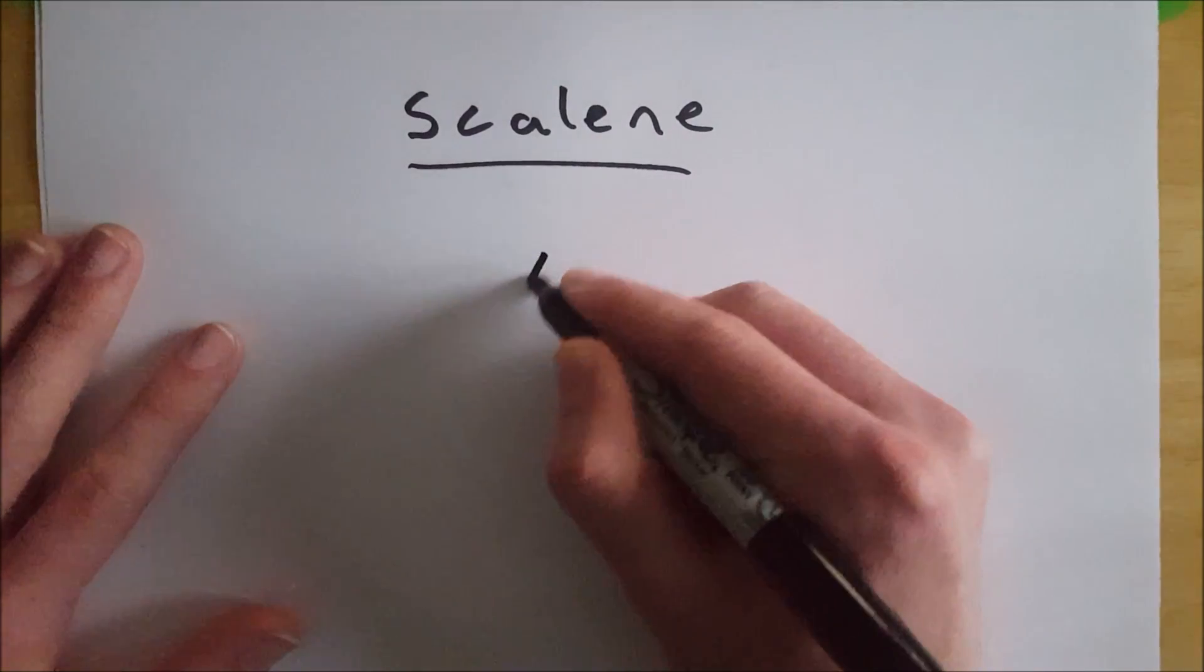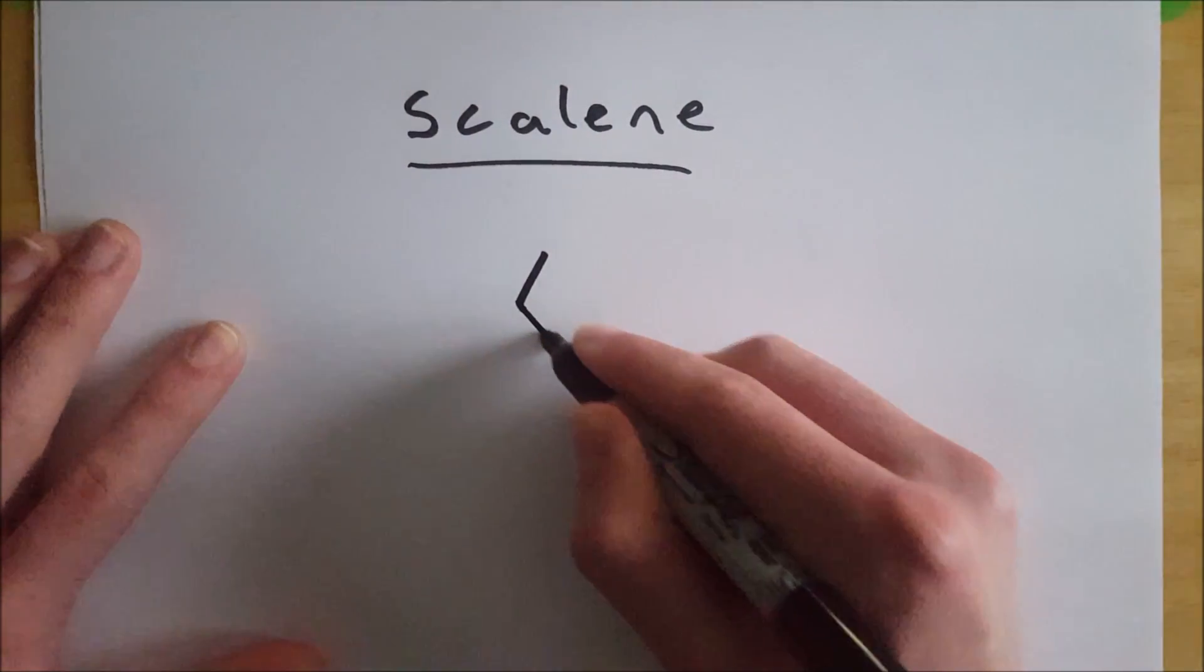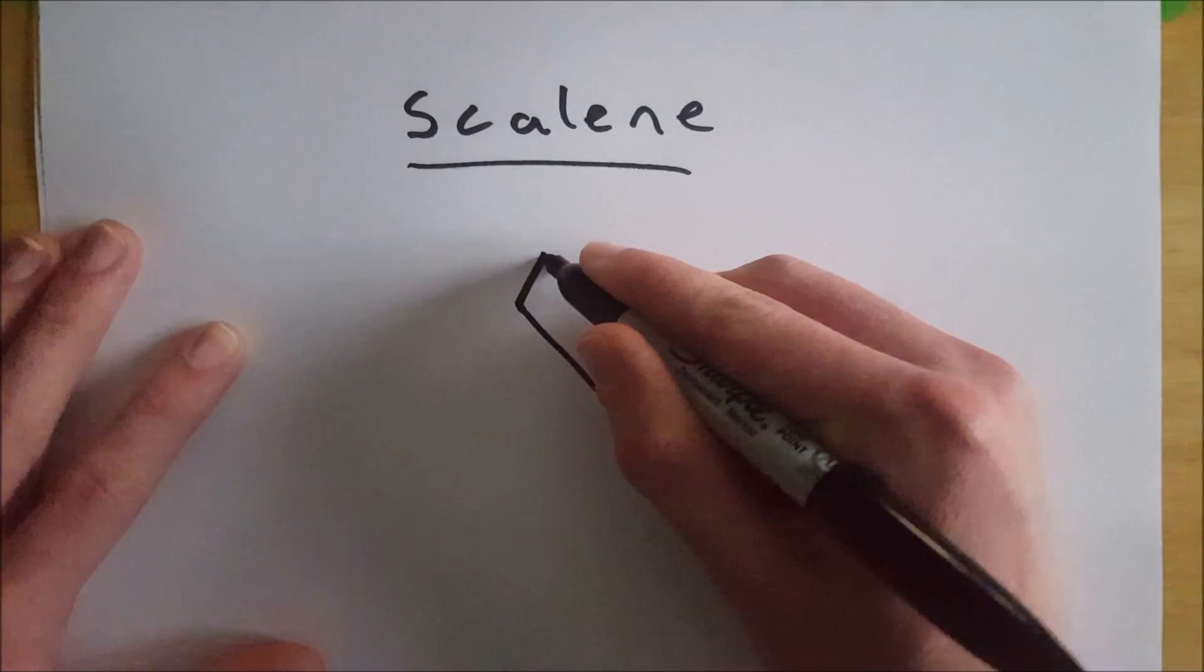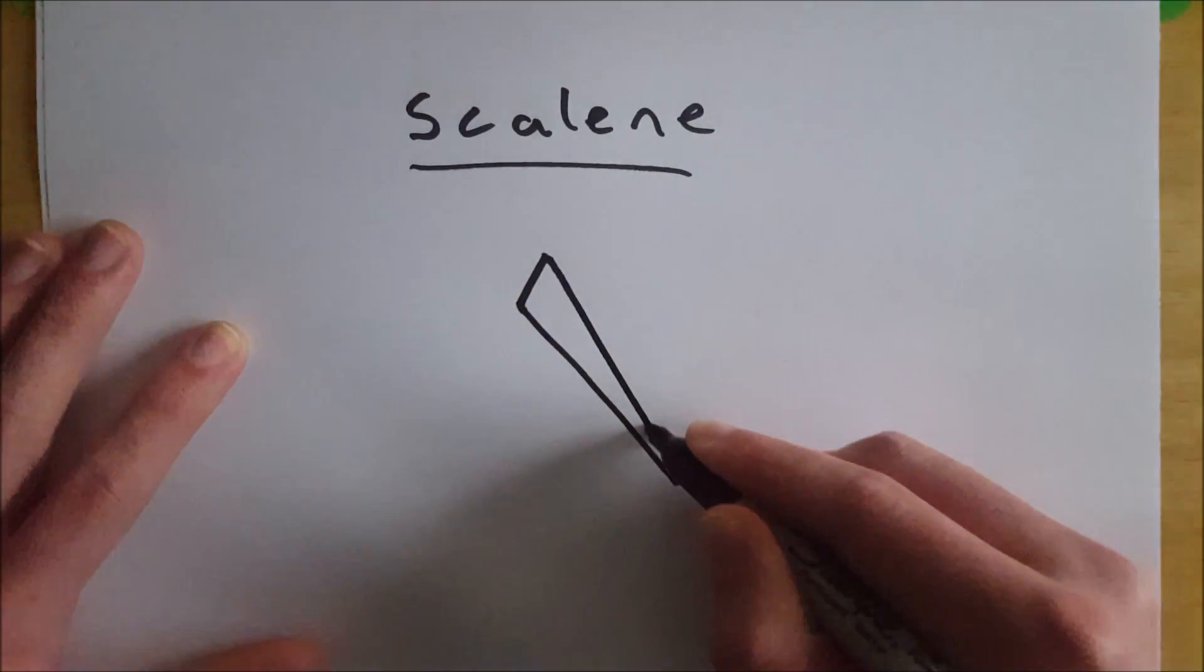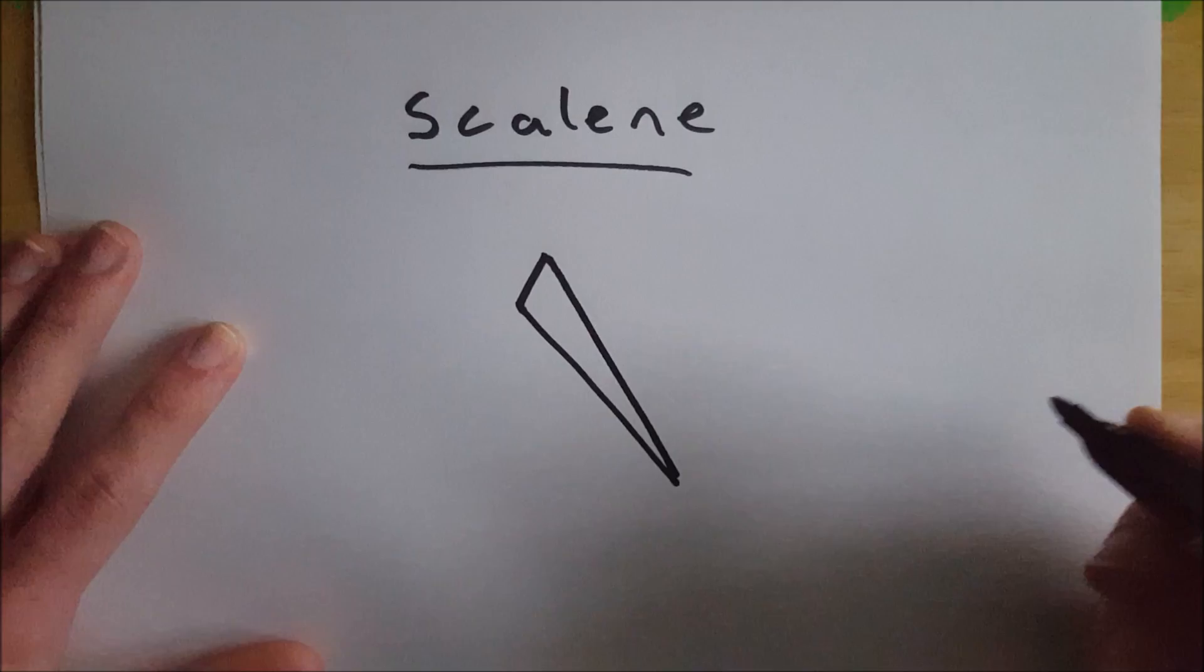So, I'll just give you an example of one. How about this one here? Here's a nice gross scalene triangle. Scalene triangles are always the ugliest.